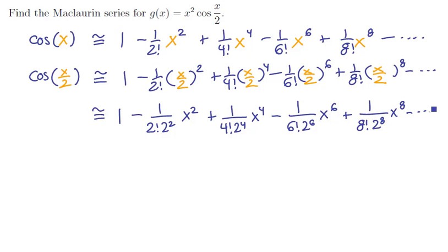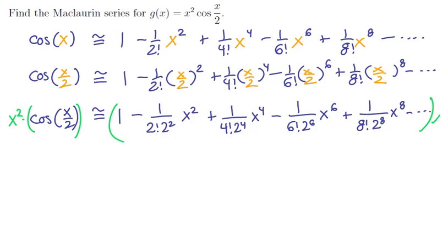Remember, you're not trying to simplify this — you're trying to write a pattern that somebody else can follow, which is why I'm keeping all of these powers the way they are. Now that we have a Taylor series for cosine of x over 2, we can take this entire expression and simply multiply both sides by x squared.